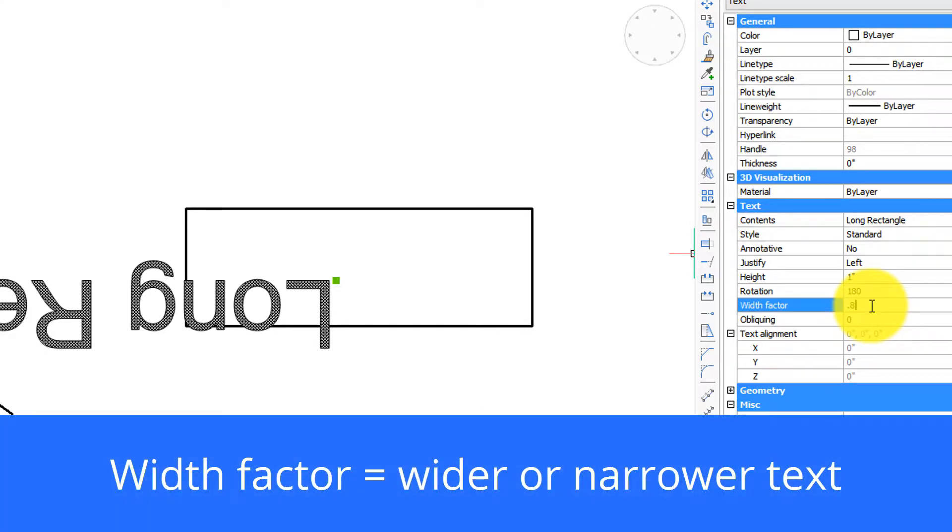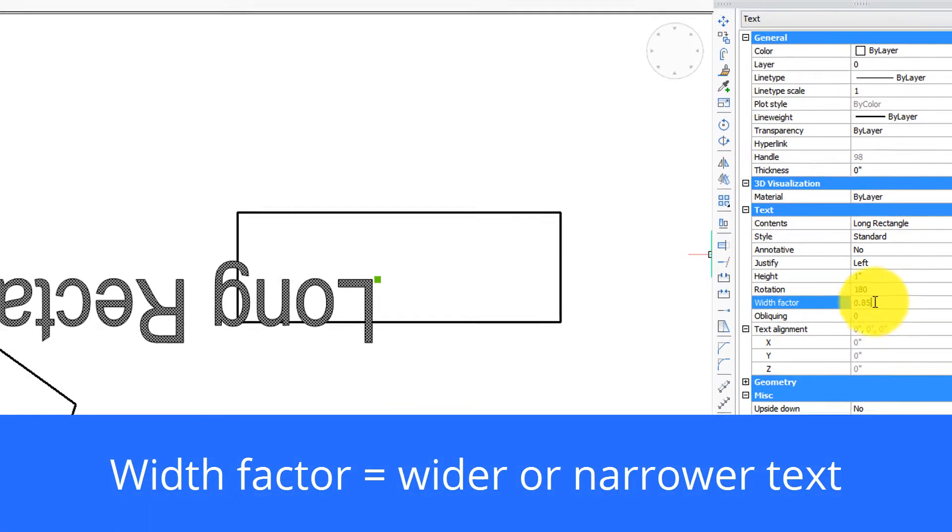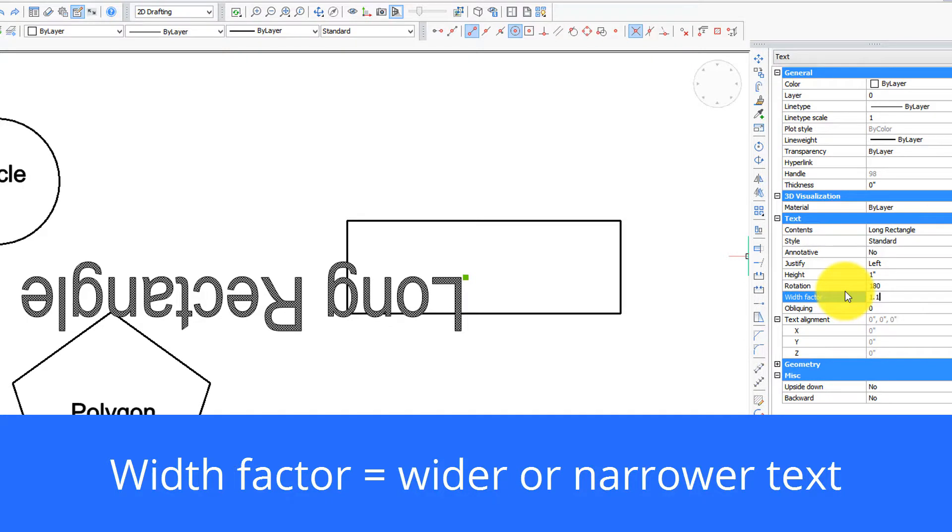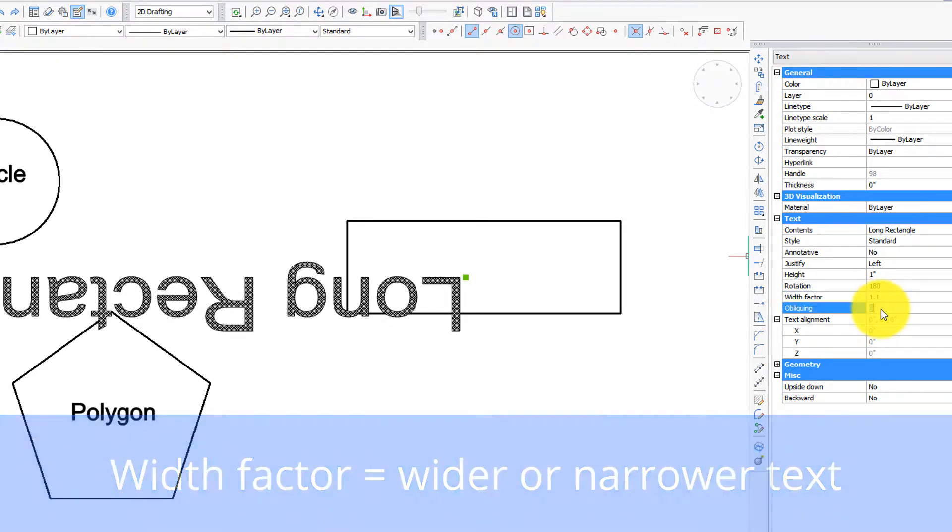The width factor. There it is a bit narrower, or numbers bigger than one give you text that's longer. Obliquing angle slants the text.